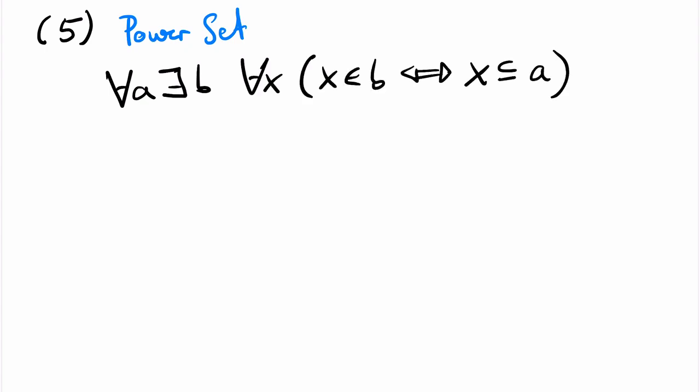Axiom number five is the power set axiom. It states that for every set a, there exists a set b that contains precisely the subsets of a. So for every x, x is an element of b if and only if x is a subset of a. This set b is denoted by curly P of a for power set.